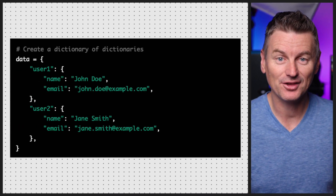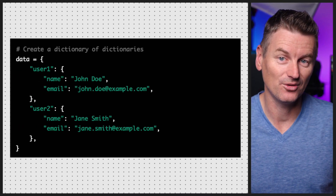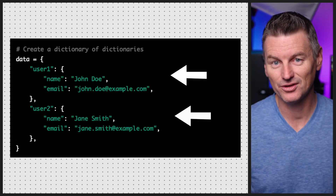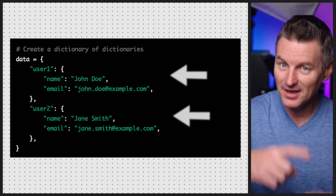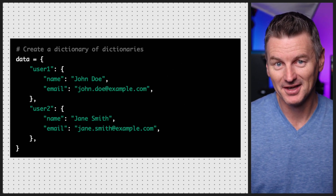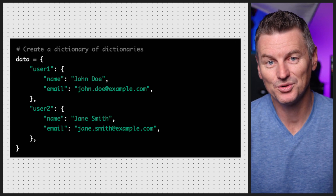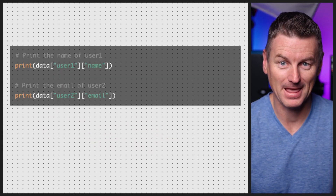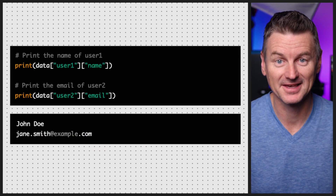One of the most powerful features of dictionaries is the ability to nest them inside each other. This allows you to create complex data structures that can be easily accessed and manipulated. The data dictionary here contains two keys — user one and user two — which are themselves dictionaries containing information about the users. We can access this information using the usual dictionary syntax, and here's what we get when we print it out.